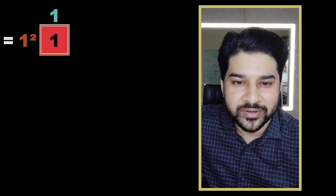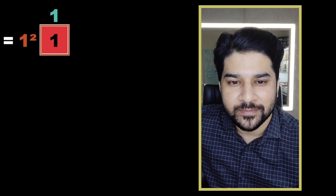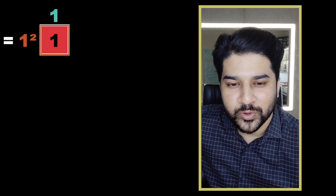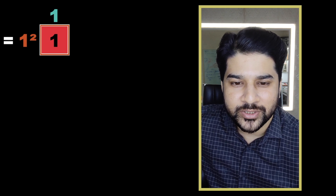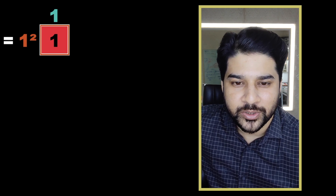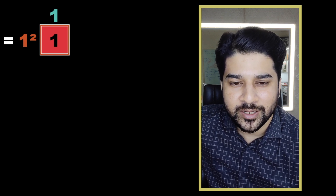Let's say you have this square — we are going to call it a unit square, which is one square. Now we want to build a bigger square of two by two, so we'll be needing more such unit squares.